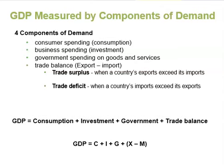So what do economists mean by investment or business spending? In calculating GDP, investment does not refer to purchasing stocks and bonds or trading financial assets. It refers to purchasing new capital goods — new commercial real estate such as buildings, factories and stores, equipment, residential housing construction, and inventories.